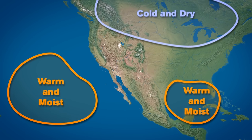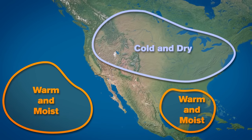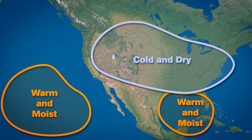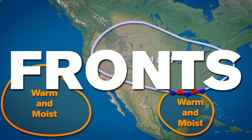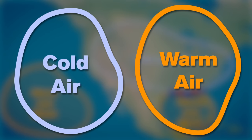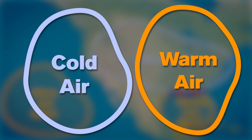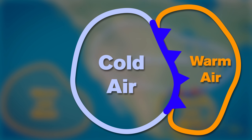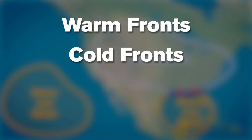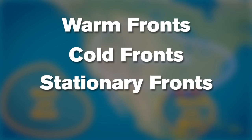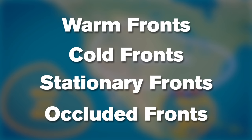As air masses move across the earth, they will eventually run into each other. The boundaries between these two air masses are referred to as fronts. Fronts are labeled in reference to the relative temperature of the air that is approaching and replacing the existing air mass. There are four types of fronts: warm fronts, cold fronts, stationary fronts, and occluded fronts.